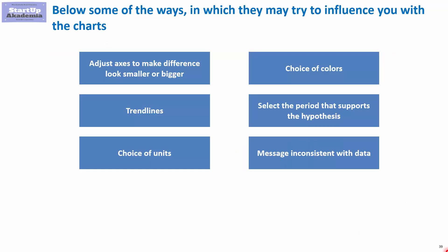So that's a short overview of the main methods. Always try to look out for these ways in which people may manipulate you through charts. Always check the axes, trend lines, units, and colors — how they are defined — and make sure that somebody did not select a period of data that supports their message. And finally, always check the message against the chart.